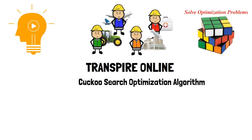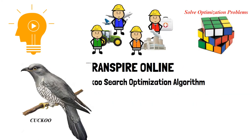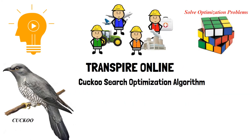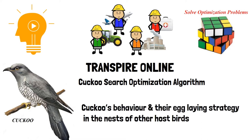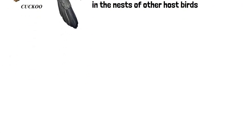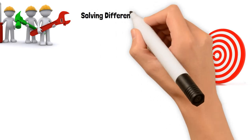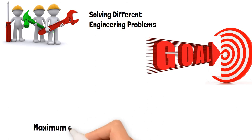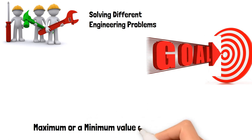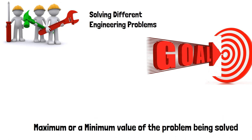The main concept explained under this video is the cuckoo's behavior and their egg-laying strategy in the nests of other host birds. Optimization plays an important role in solving different engineering problems. The goal of the optimization process is to determine either a maximum or a minimum value of the problem being solved.